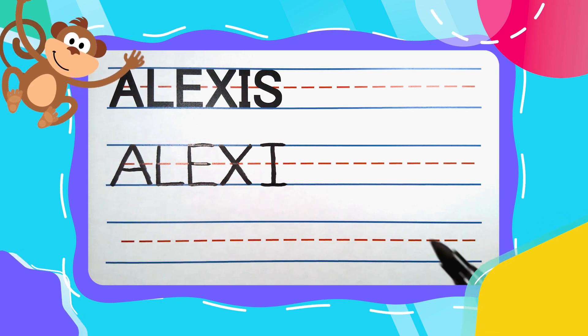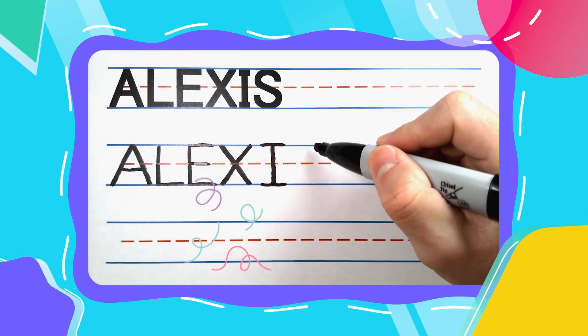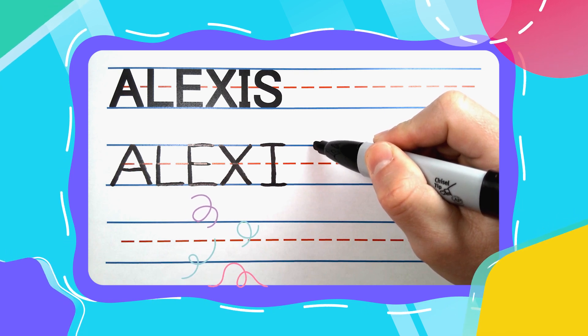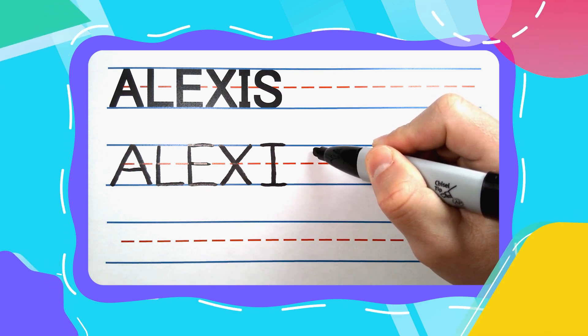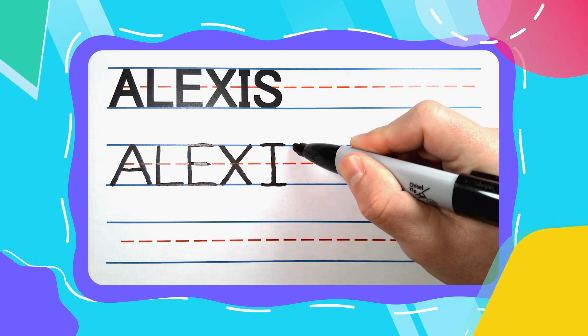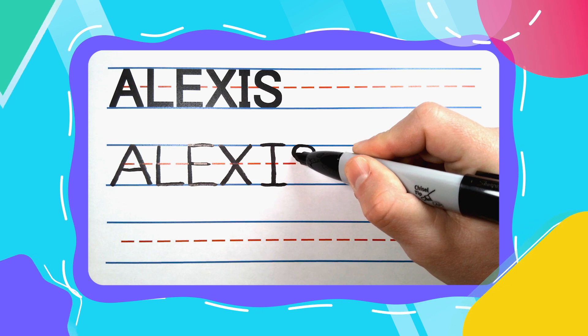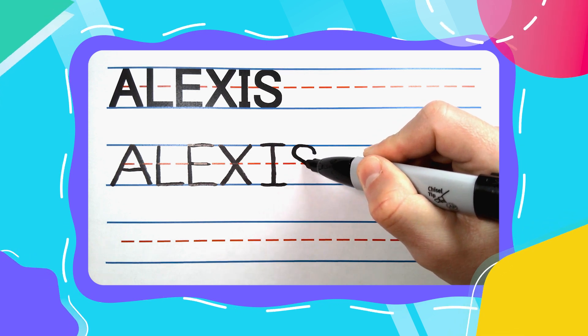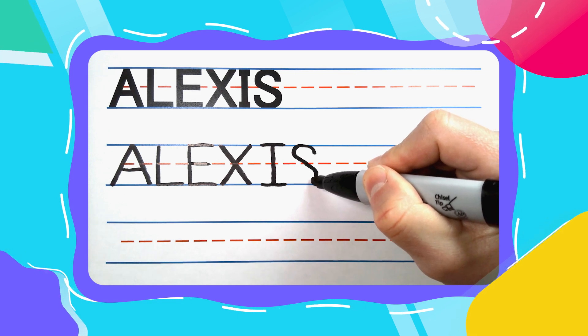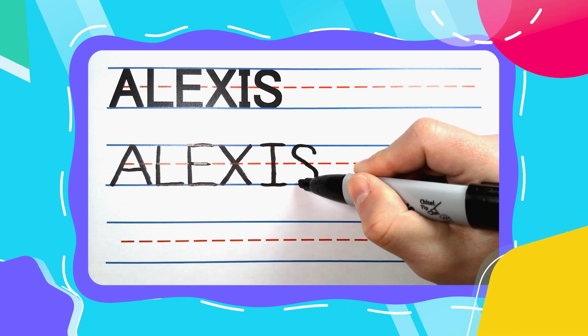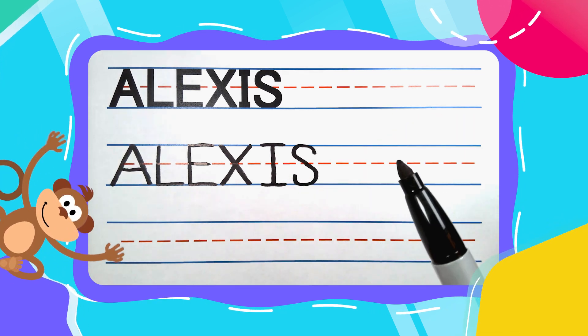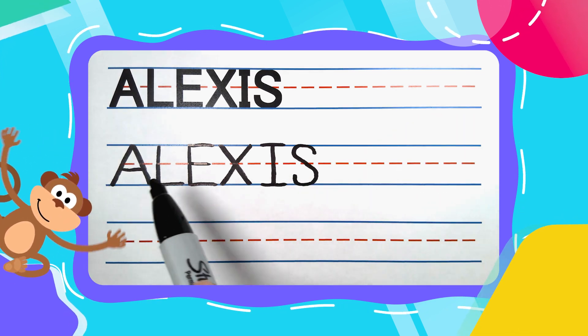The last letter in Alexis is the super squiggly silly S. Silly S's start just below that top line. Come up and to the left. Touch the top line. Curve a tight curve and diagonal back through the middle. Curve another tight curve. Touch the bottom line. And you're going to finish up to complete your S and complete the name Alexis.